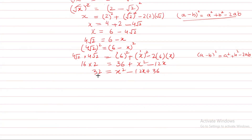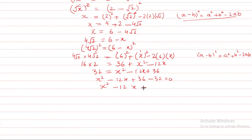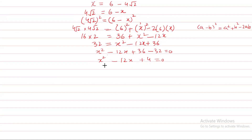We shift 32 from the right to the left side, so X squared minus 12X plus 36 minus 32 equals 0. This simplifies to X squared minus 12X plus 4 equals 0. This is a quadratic equation.